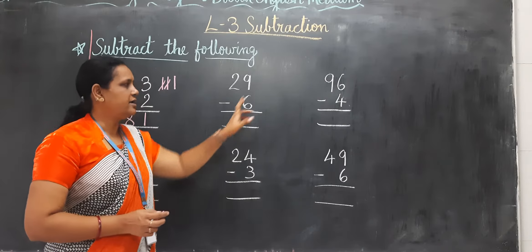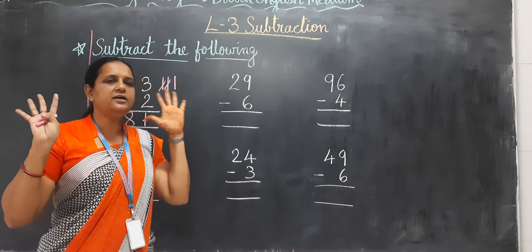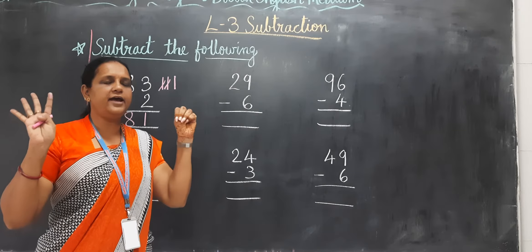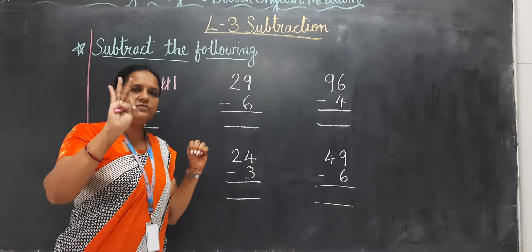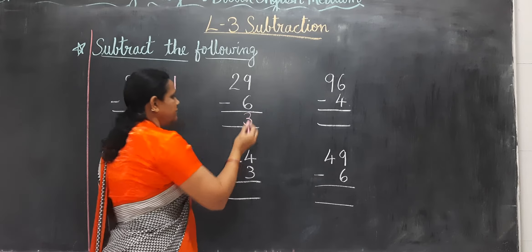Now next one, 9 minus 6. Take 9 fingers and cut 6. 1, 2, 3, 4, 5 and 6. Now how many fingers remain? 3.